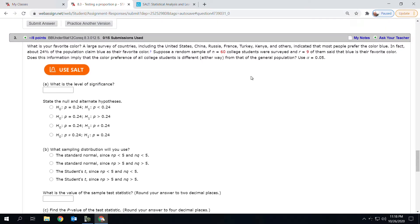Let's look at a second example of conducting a proportion test. What is your favorite color? A large survey of countries including the United States, China, Russia, France, Turkey, Kenya, and others indicates that most people prefer the color blue. In fact, about 24% of the population claim blue as their favorite color. Suppose a random sample of 60 college students were surveyed and nine of them said that blue is their favorite color. Does this information imply that the color preference of all college students is different from that of the general population?